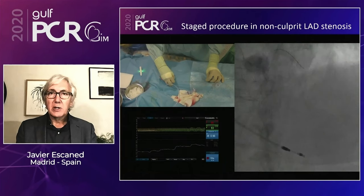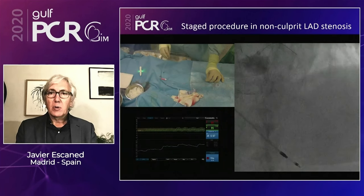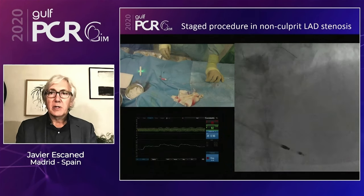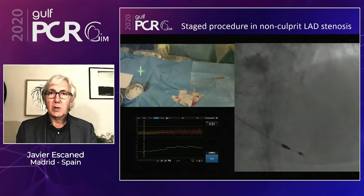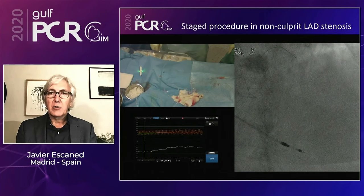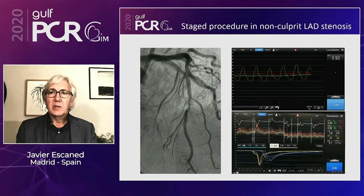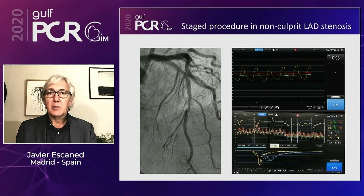We completed the study with an RFR pullback, which confirmed that the stenosis in this vessel was non-flow-limiting, although it did account for some pressure loss documented in the study. In summary, this case eloquently demonstrates that this non-culprit lesion was a non-flow-limiting stenosis, and therefore there was no need to treat this particular vessel.